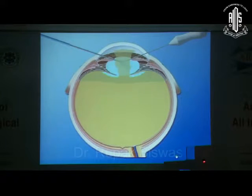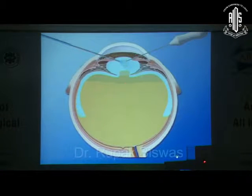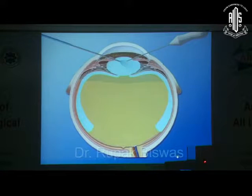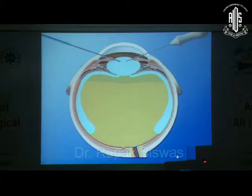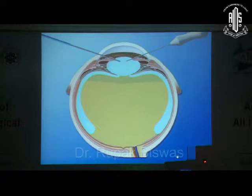If you start doing vitrectomy from here, the more you do vitrectomy, because of the suction you are pulling the vitreous up and up every time. More bulk of the vitreous is coming, causing enlargement of this area. Because of the hydration of the vitreous, more vitreous starts coming, causing more traction to the peripheral part of the vitreous, which can cause a retinal tear there.